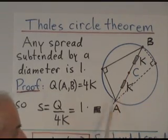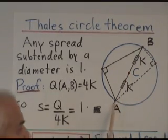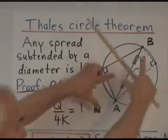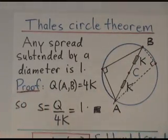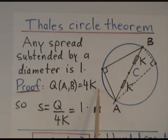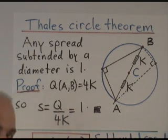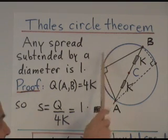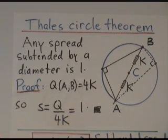Well, if that's the quadrance K, then the quadrance of AB, since there's two of these, is 4 times K. And so this spread here is this quadrance, which is 4K, divided by 4K. Well, 4K divided by 4K is 1. So no matter where that point is, that's always a right triangle there.